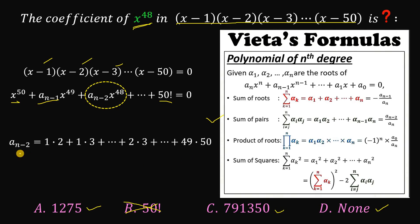So technically speaking, we need to have 1 times 2 plus 1 times 3 all the way down to 2 times 3 plus 2 times 4 plus 2 times 5, all the way down to 49 times 50. And that's what we want to find.